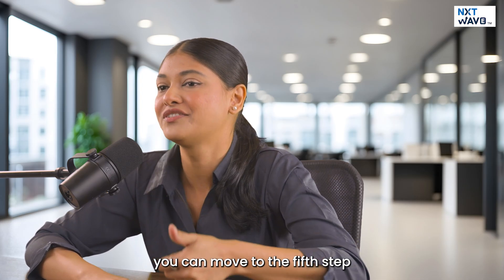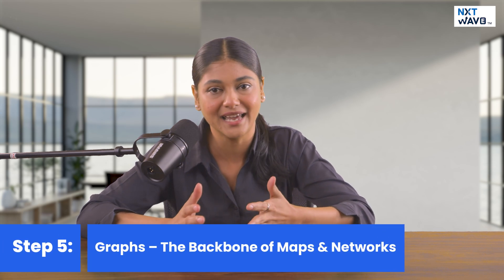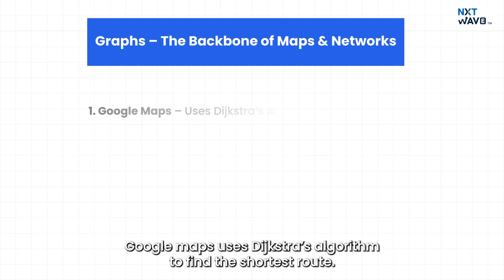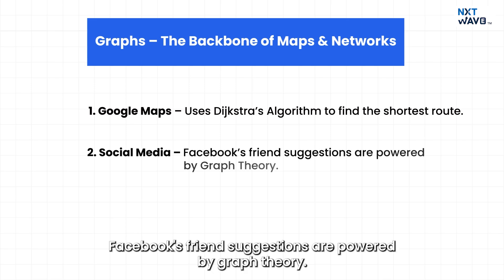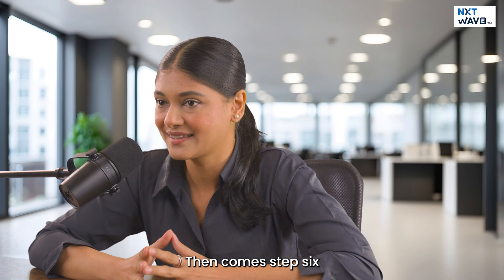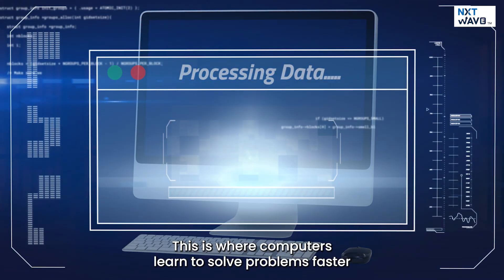Step five: graphs — the backbone of maps and networks. Graphs represent connections. Google Maps uses Dijkstra's algorithm to find the shortest route. Social media: Facebook's friend suggestions are powered by graph theory. And the internet itself is structured as a graph.